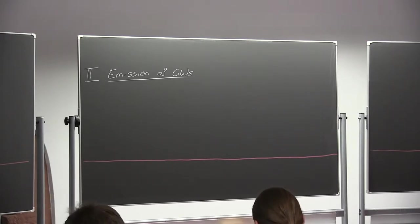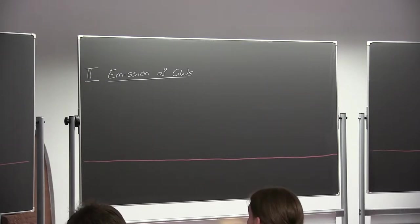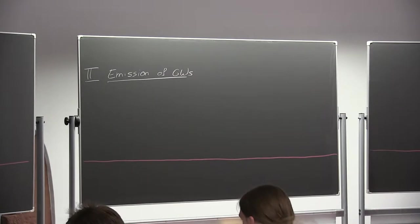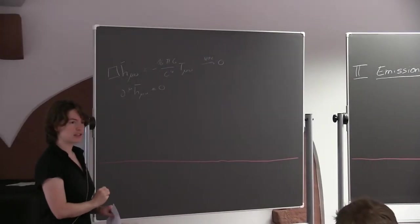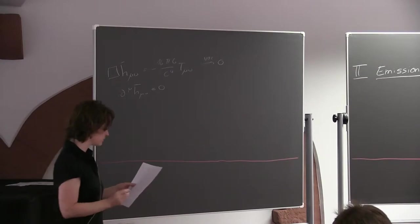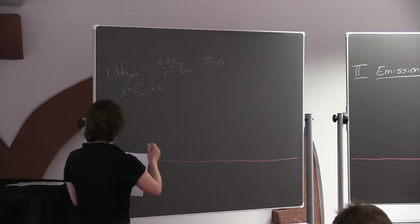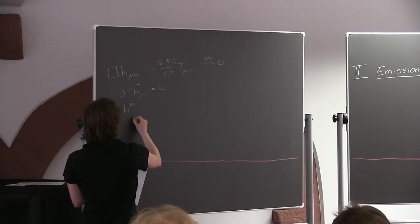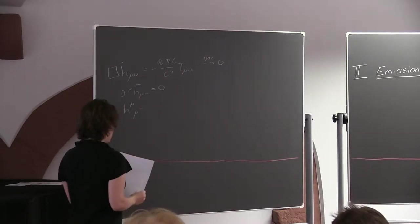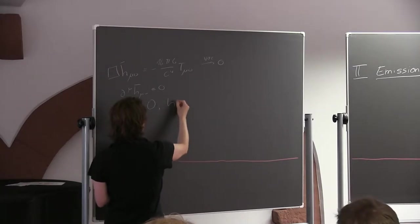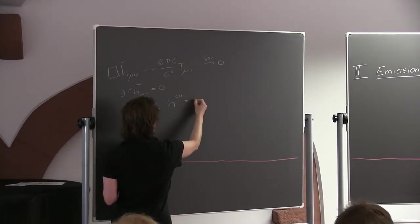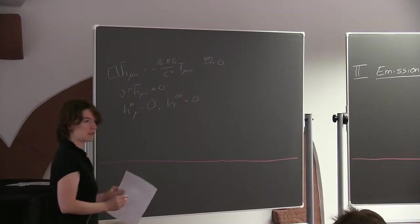We also looked at the gauge degrees of freedom. There was Lorentz gauge, which says del_mu h-bar^{mu nu} equals zero. And then there was transverse traceless gauge, which I made a bit of a mess of last time, so let me repeat it here. There were two conditions: one is that the trace is zero, and the other is that the zero-i components are zero.